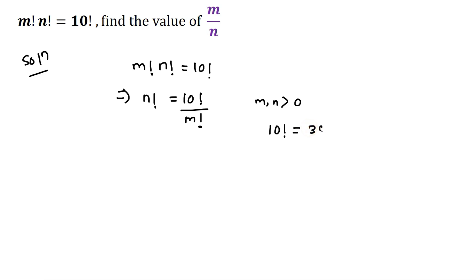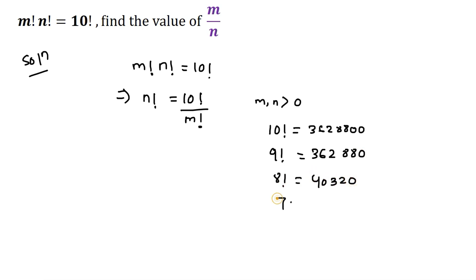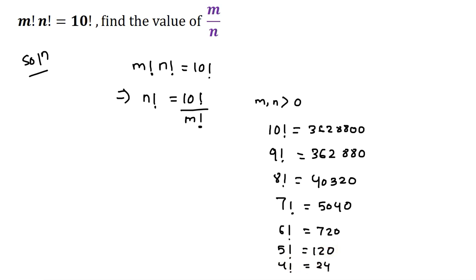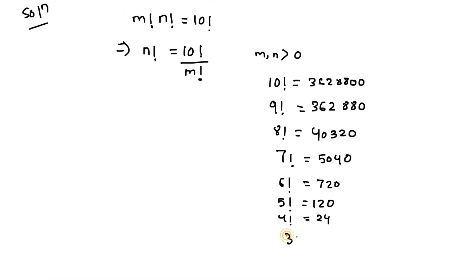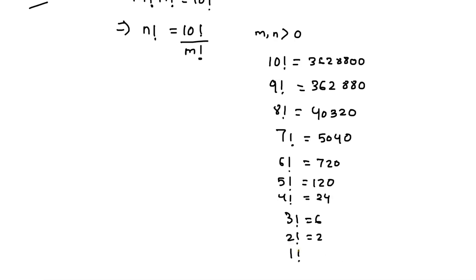10 factorial is 3,628,800. 9 factorial is 362,880. 8 factorial is 40,320. 7 factorial is 5,040. 6 factorial is 720. 5 factorial is 120. 4 factorial is 24. 3 factorial is 6. 2 factorial is 2. 1 factorial is 1.